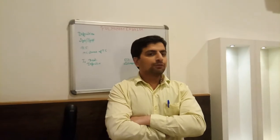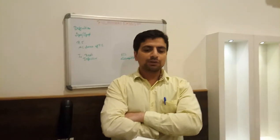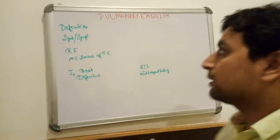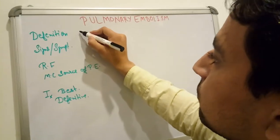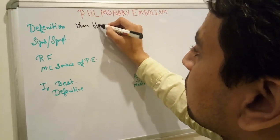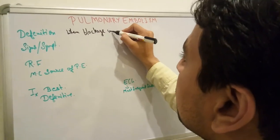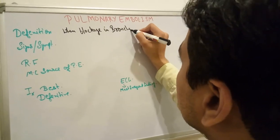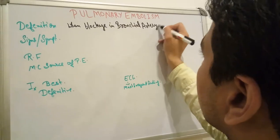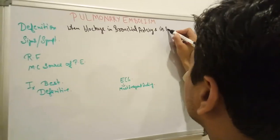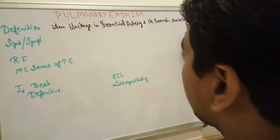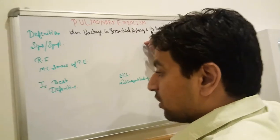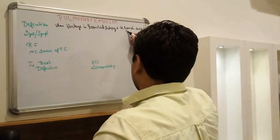Good evening, online viewers. I am thankful for the doctors attending my lecture today, and thanks to online viewers also for watching. Our today's topic is pulmonary embolism. Pulmonary embolism means when there is a blockage in a bronchial artery or any branch due to a clot which travels from somewhere and gets stuck inside a bronchial artery or any branch — this is known as pulmonary embolism.